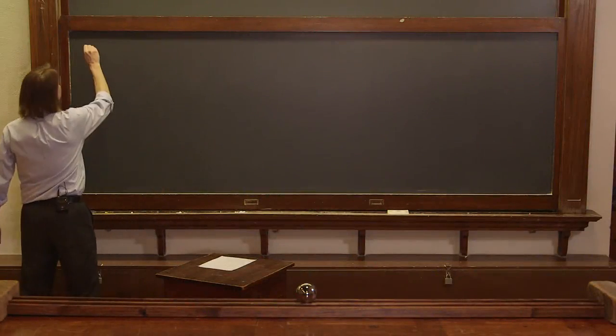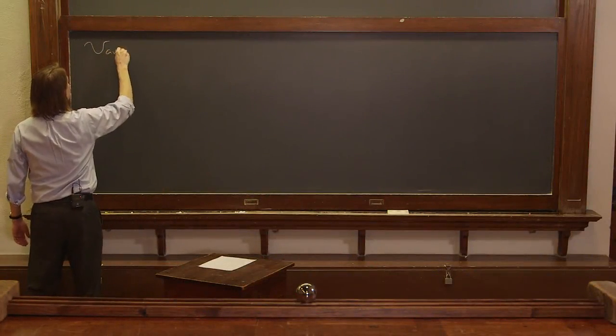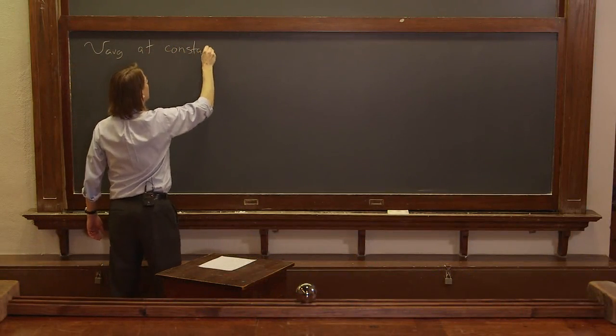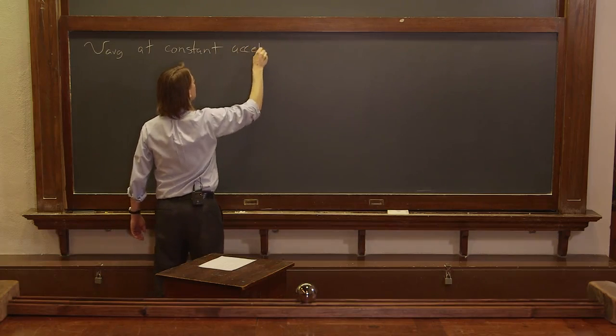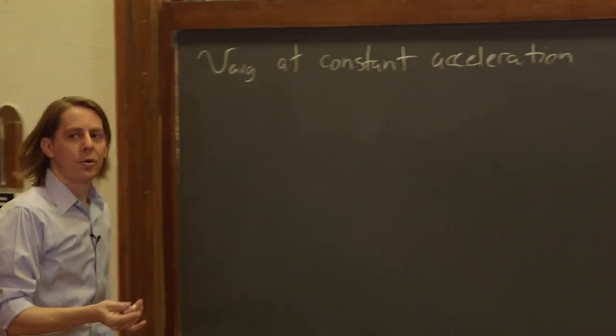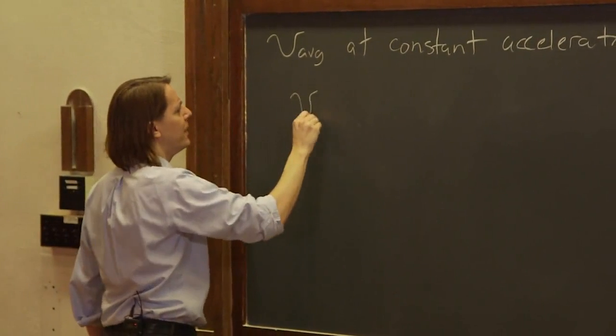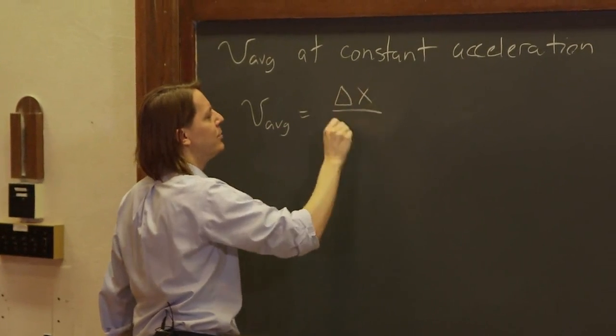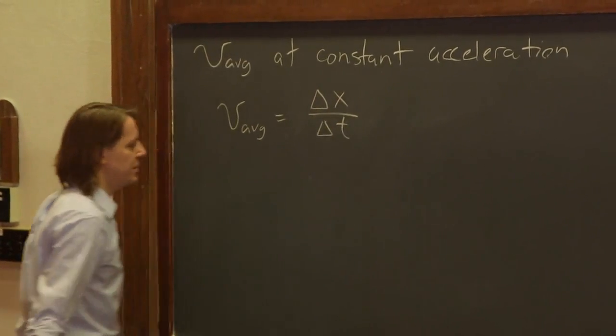I've got one more constant acceleration formula for you. Let's look at V average at constant acceleration. So you recall V average, we defined it this way. We said it's the total change in position over the total change in time.